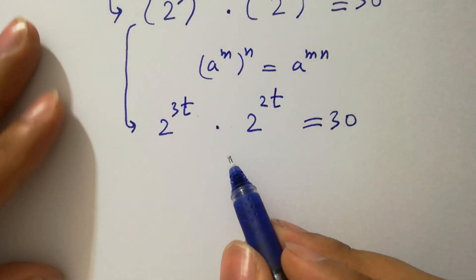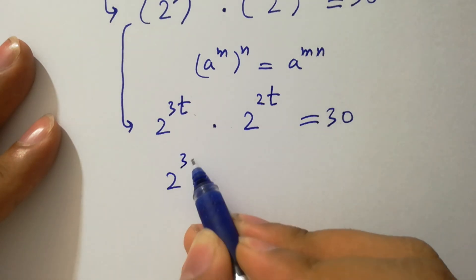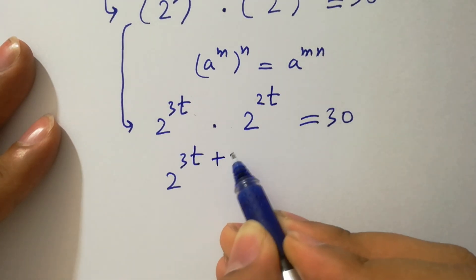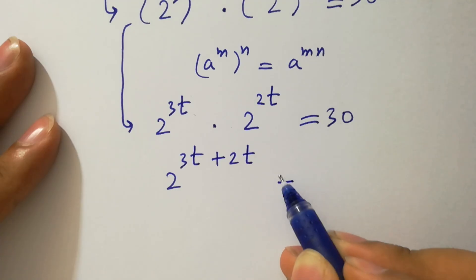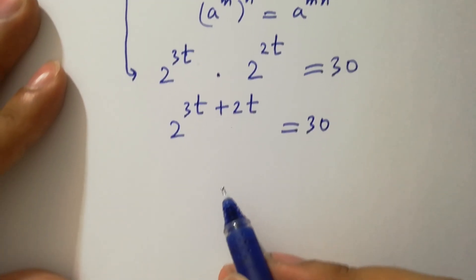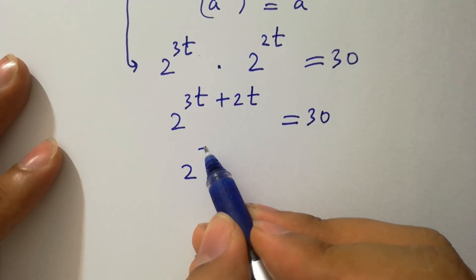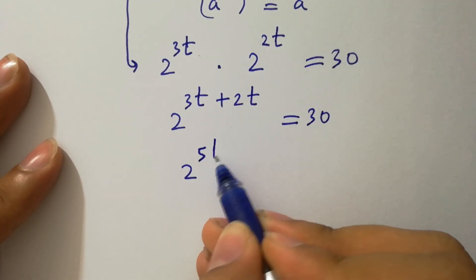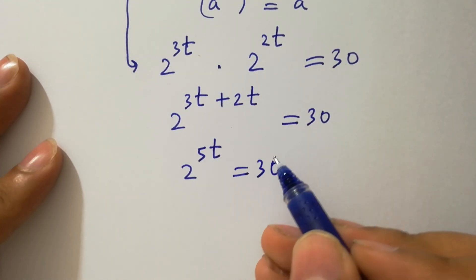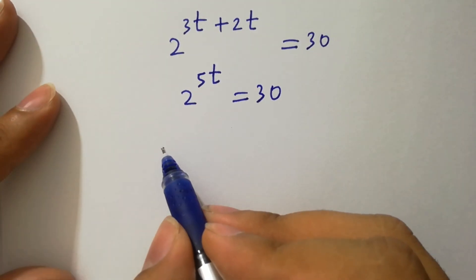Since the base is the same, we add the powers: 2 to the power 3t plus 2t equals 30. So 3 plus 2 gives us 2 to the power 5t equal to 30.